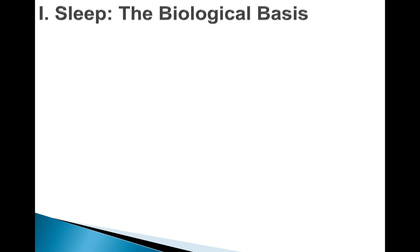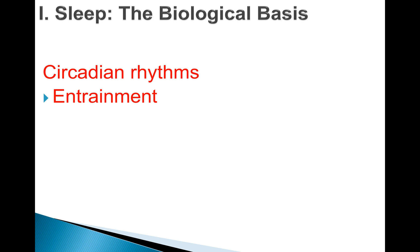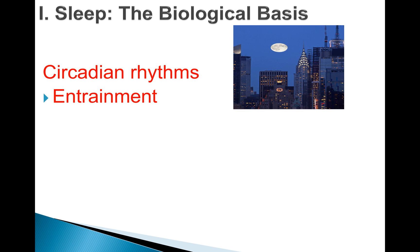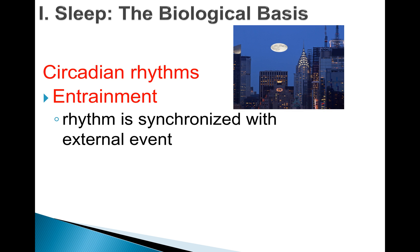To start with the biological basis of sleep, we have circadian rhythms — 'circa' just means daily. A circadian rhythm is this daily rhythm of sleep and wakefulness that we have. There are a couple of different sources of this daily rhythm. Part of that is from entrainment, which just means the rhythm synchronized with an external event.